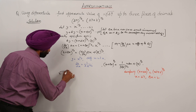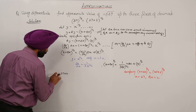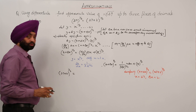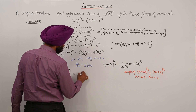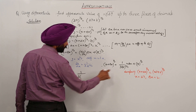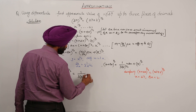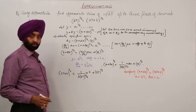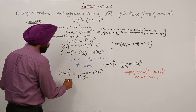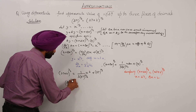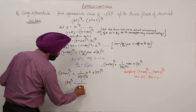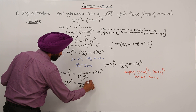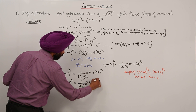So now substituting: 27 plus 2, raised to power 1/3, is equal to 1 upon 3 times 27 raised to power 2/3, into 2, plus 27 raised to power 1/3. This can be written as: cube root of 29 is equal to 1 upon 3 times (3 cubed) raised to power 2/3, into 2, plus (3 cubed) raised to power 1/3.